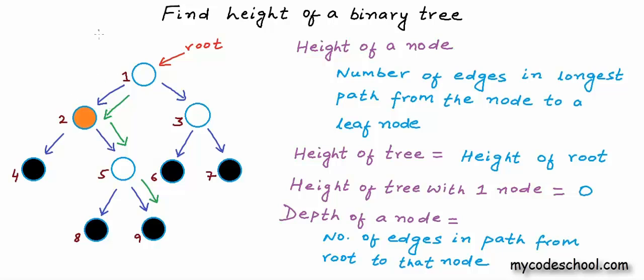For node 2 in this example tree, depth is 1 and height is 2. For node number 9 which is a leaf node, depth is 3 and height is 0.